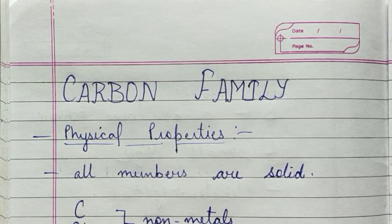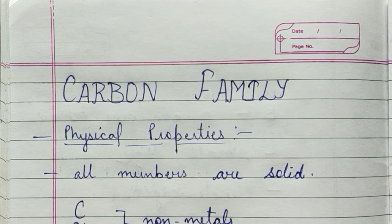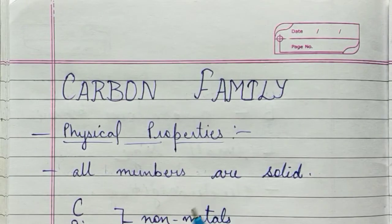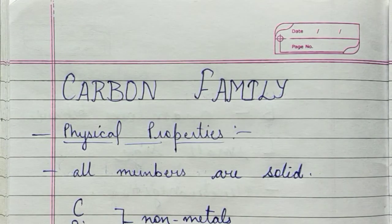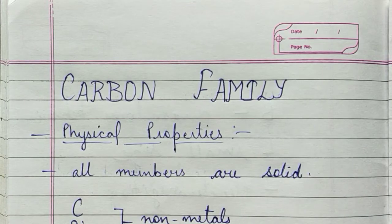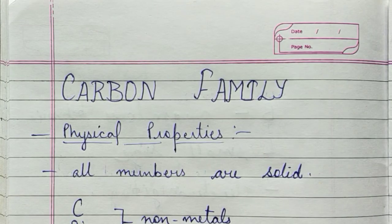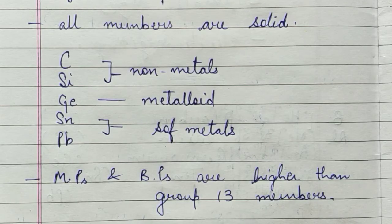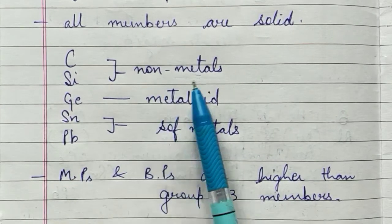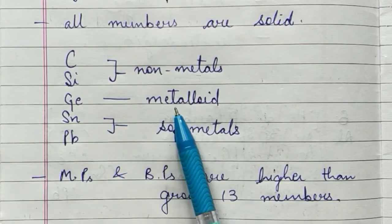Today we will discuss the physical and chemical properties of the carbon family. Talking about the physical properties, all the members of the carbon family — carbon, silicon, germanium, tin, and lead — are solid in nature. Carbon and silicon are non-metals, germanium is a metalloid.